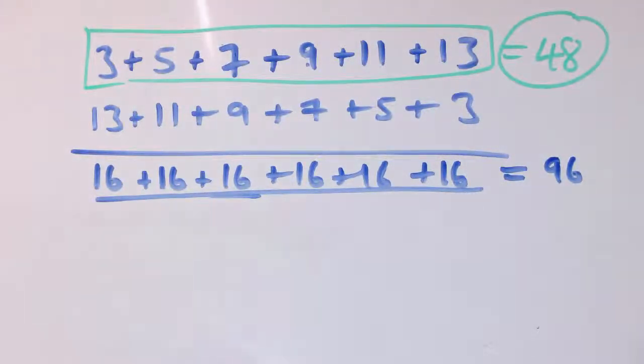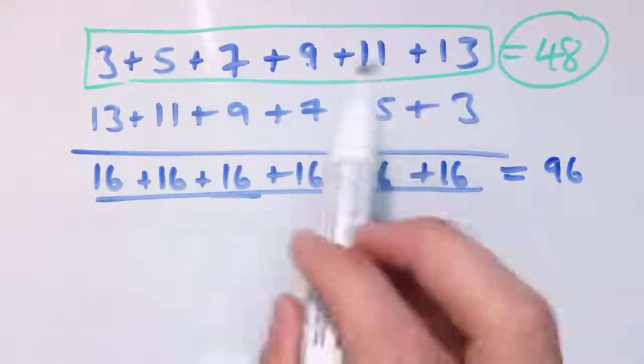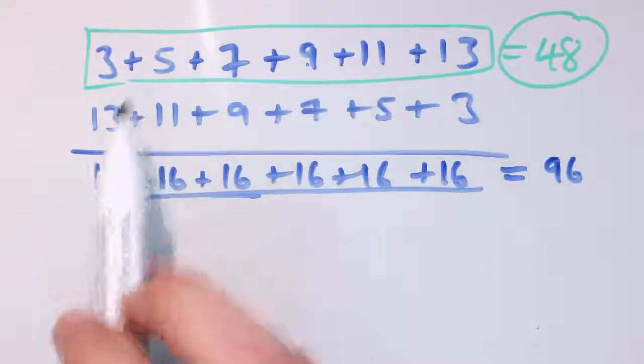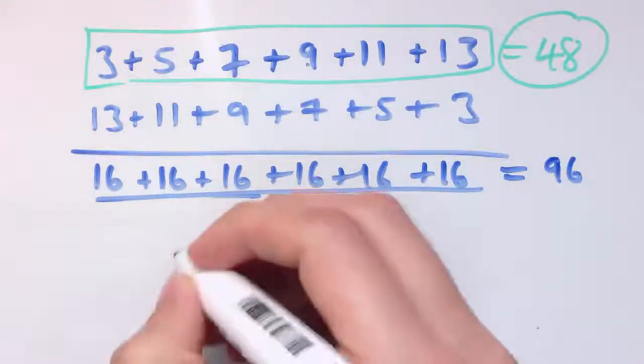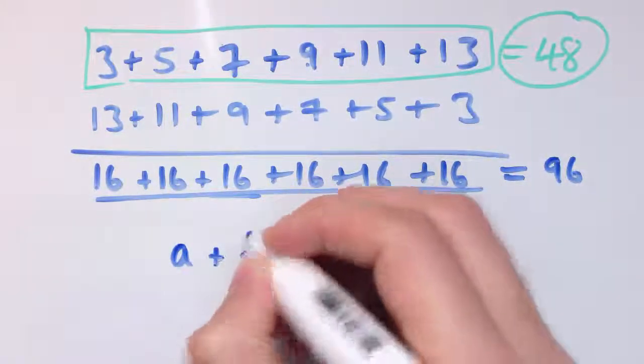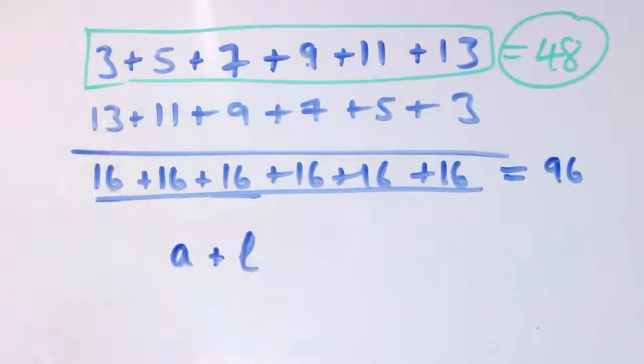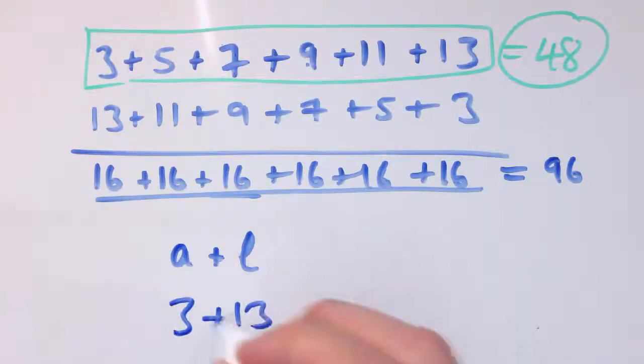And this works in general, you see. I've got six terms here. And what I did was, if you take the first term and the last term, so let's say the first term is a and the last term is l, I can take the first term plus the last term, which is here 3 plus 13.